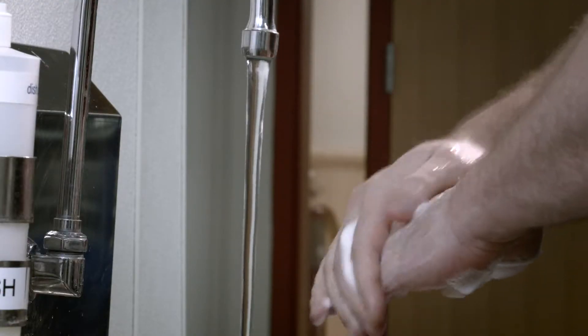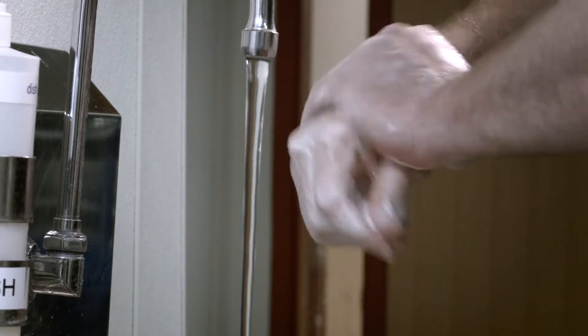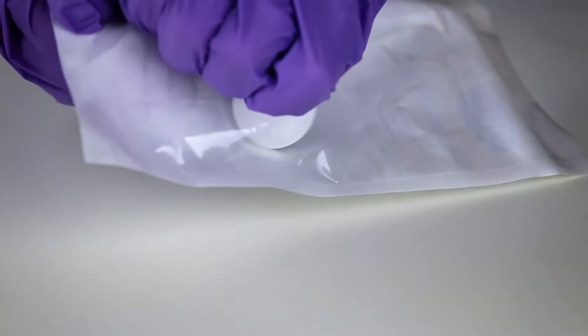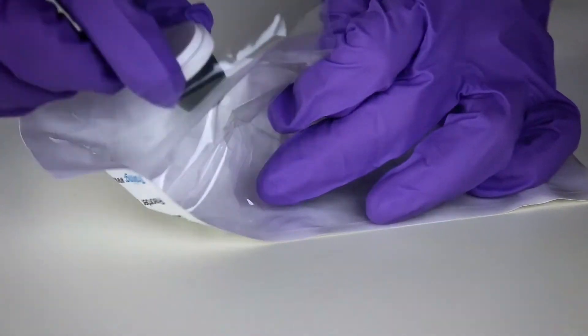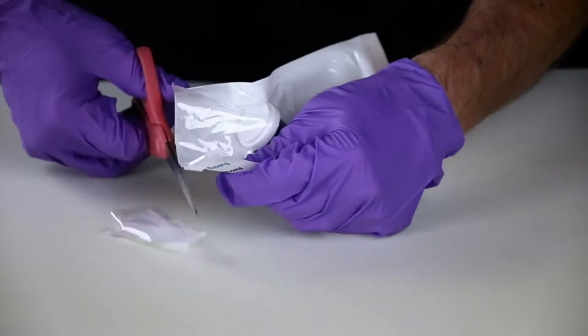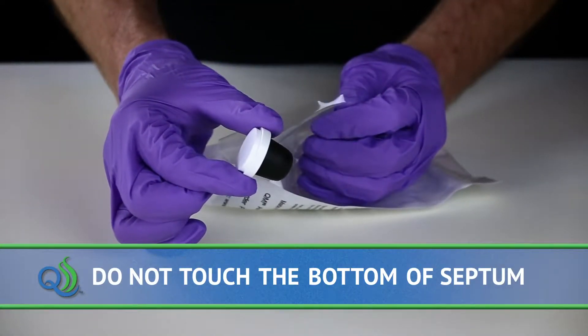To begin, wash hands thoroughly prior to putting on personal protective gear and disposable gloves. Remove the appropriate QualiTrue septum from the package by peeling the clear cover away from the white backing or cutting the plastic package. Be sure not to touch the bottom portion of the septum.